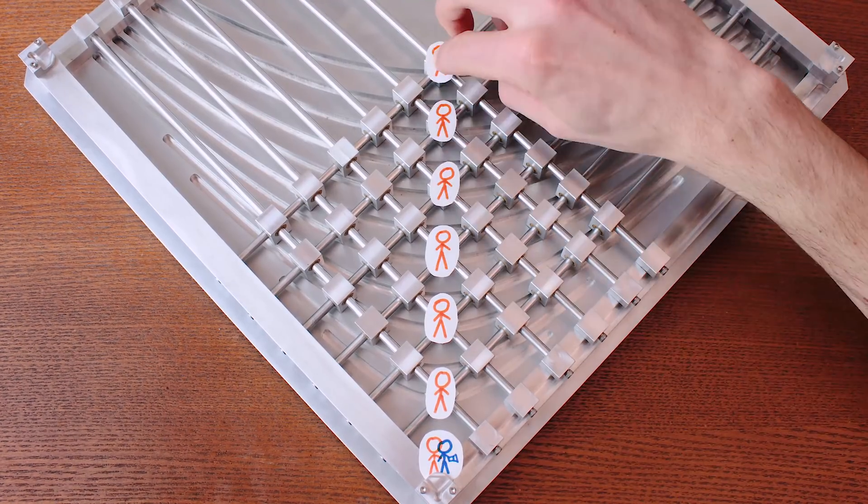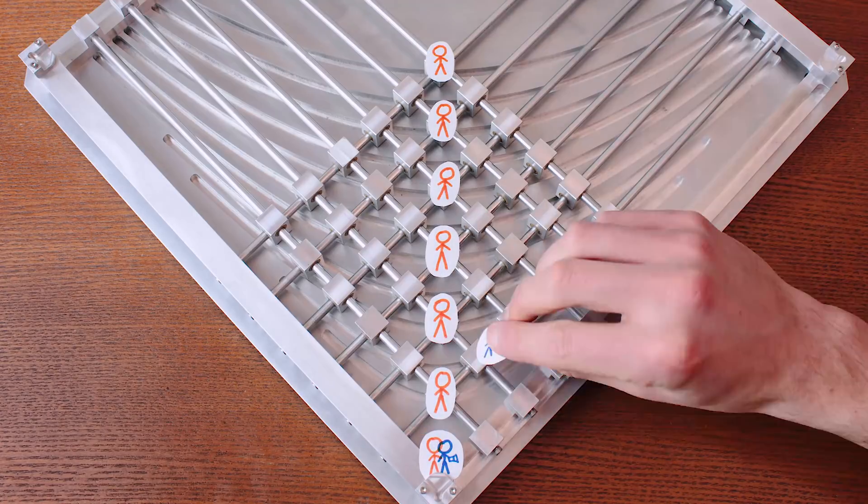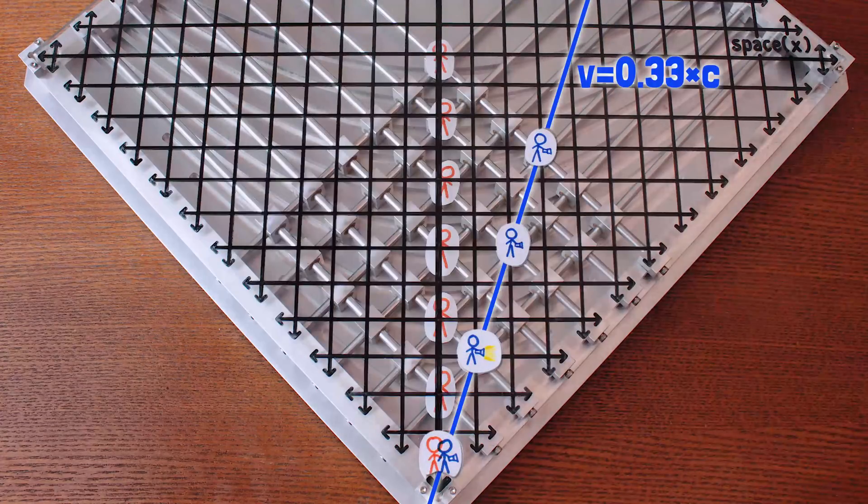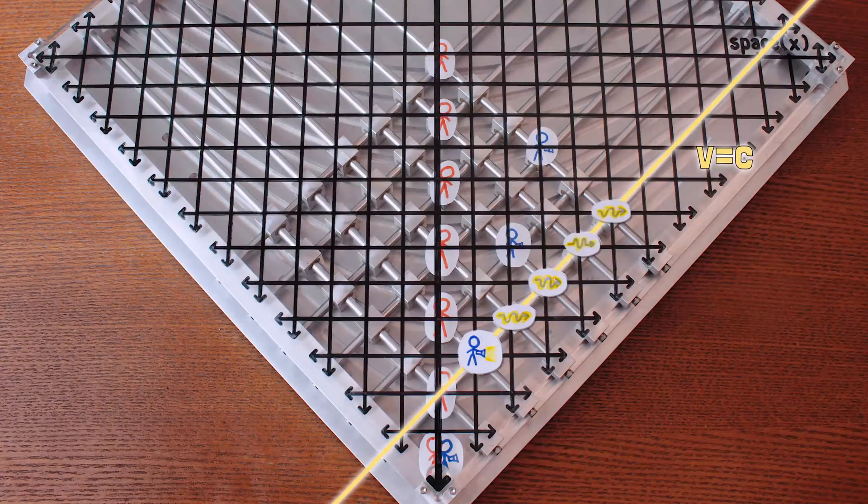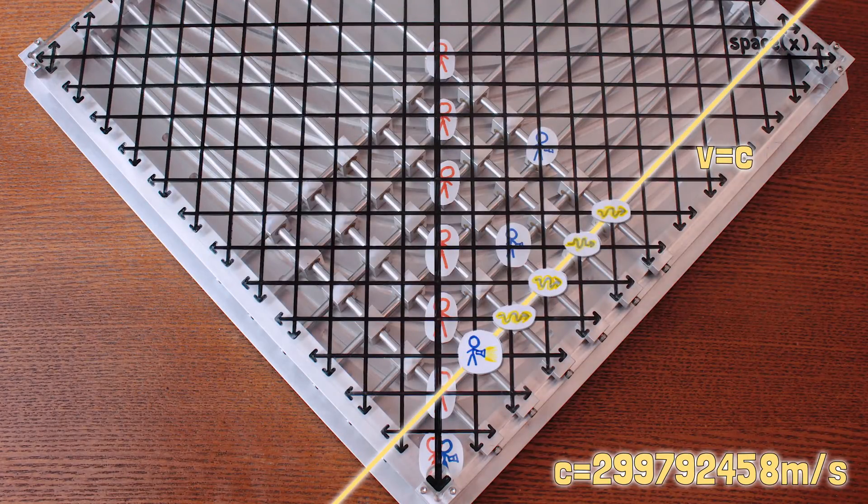For example, let's say I'm not moving, that is, I'm at the same position at all times, and you're moving a third the speed of light to my right, and you turn on a flashlight. Then that light will move at the speed of light c, or about 300 million meters per second, which is drawn as a 45-degree line on this spacetime diagram.